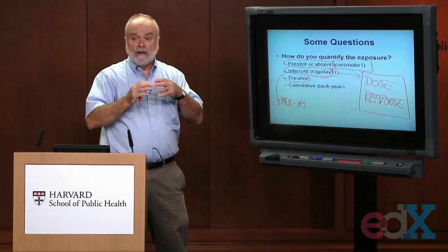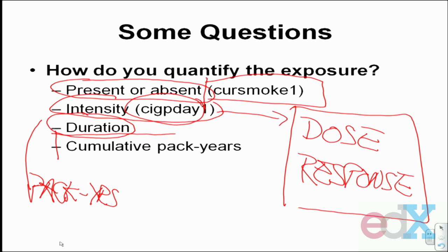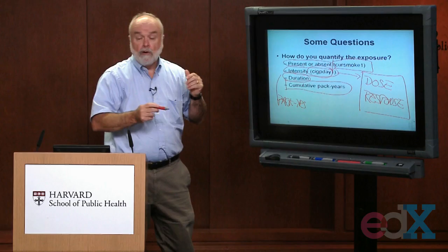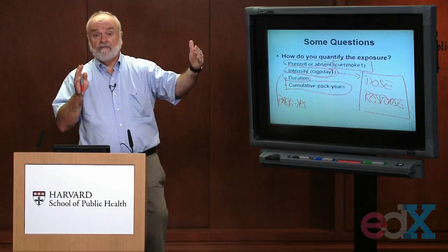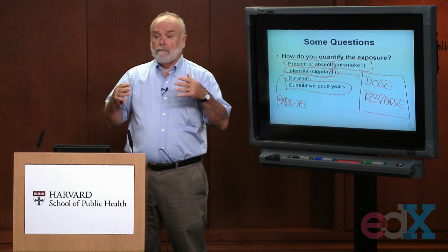You could also try to combine intensity and duration by looking at cumulative pack years — not just asking how much you smoke or how long you've been smoking, but combining them by essentially asking how many packs of cigarettes have you smoked over the years. Two people both smoking three packs a day: if one has been doing it for five years and another for ten years, that second person has more of a cumulative effect because it's been going on for a longer period of time.